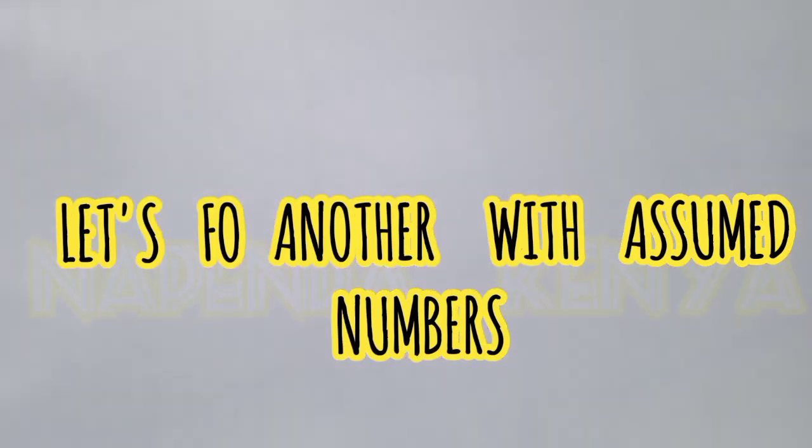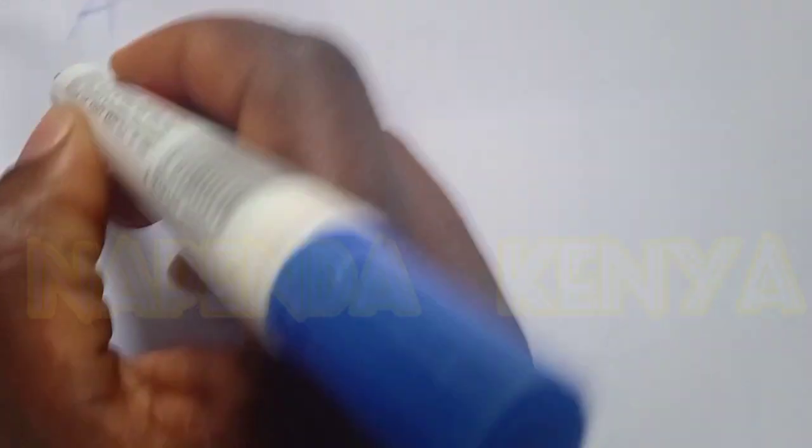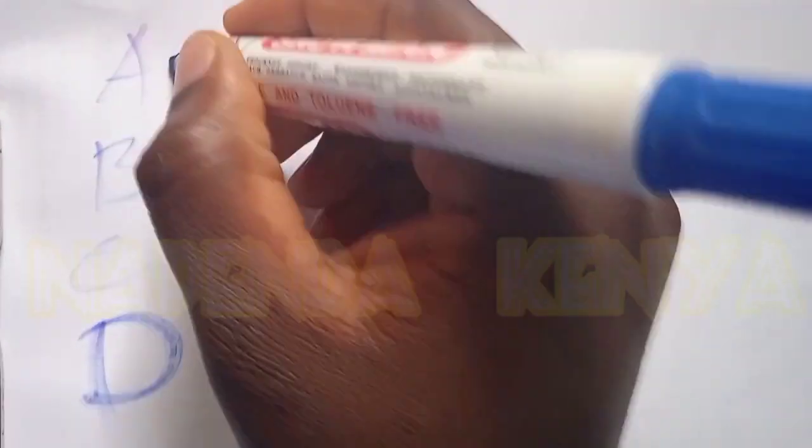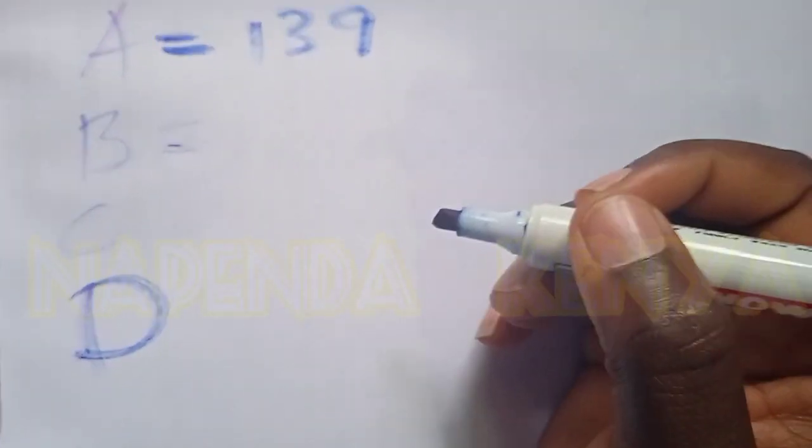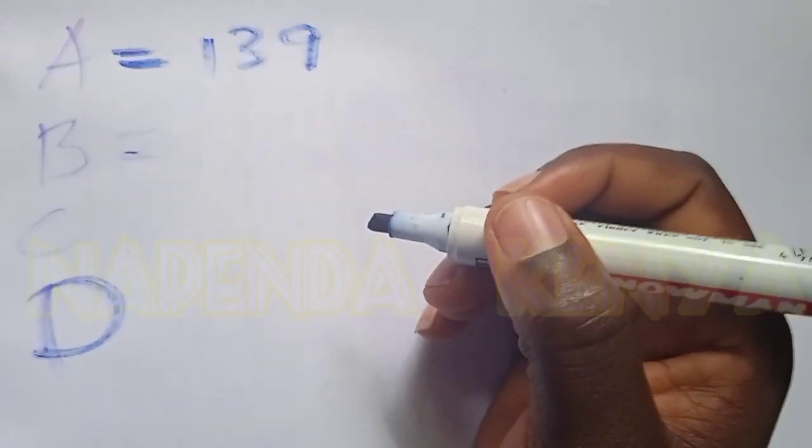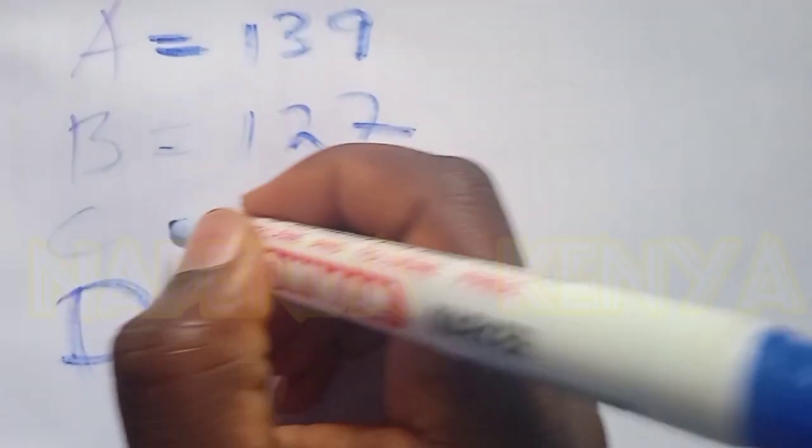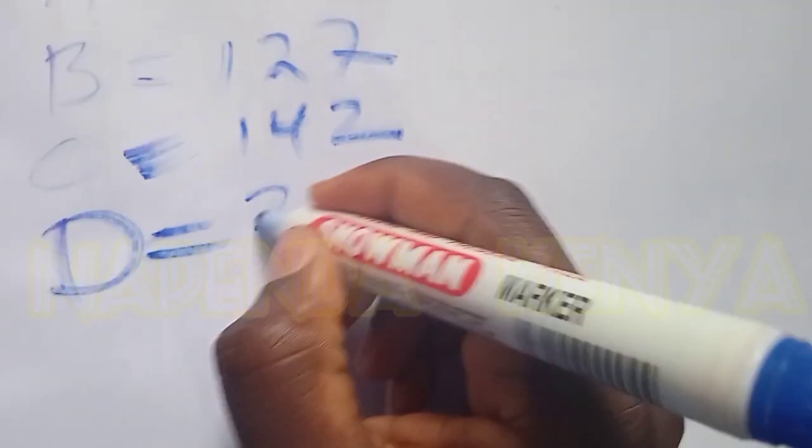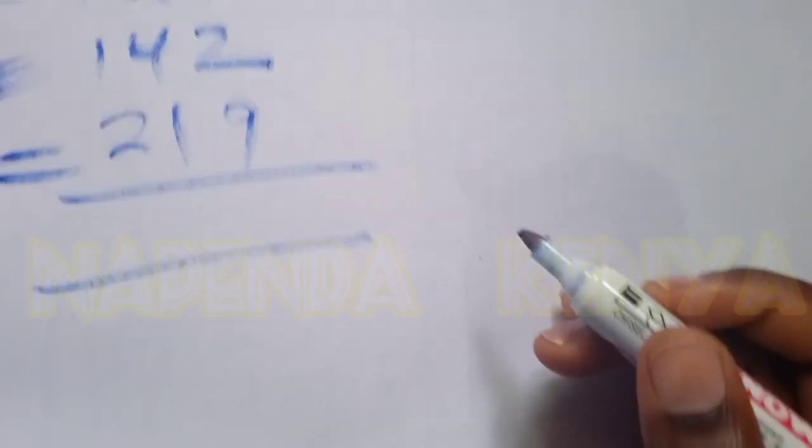Let us do another simple one. I want us to do simple ones that are not exceeding 230 maximum. Candidate A gets 139, candidate B gets 127, candidate C gets 142, candidate D gets 219. What is the total? Total number of votes is 627.